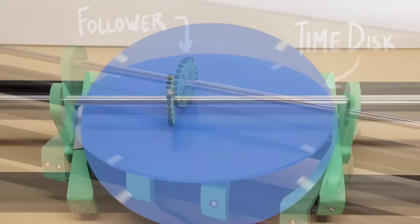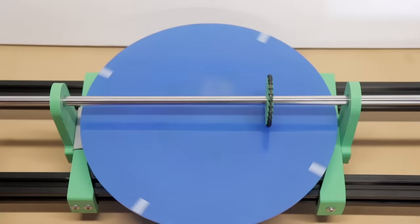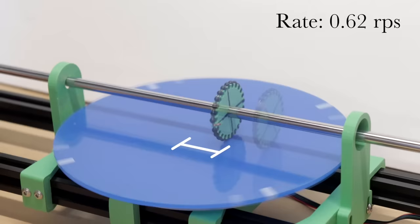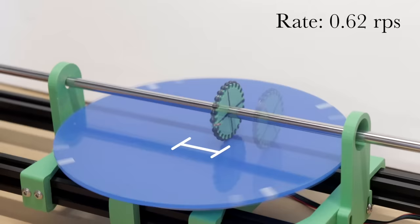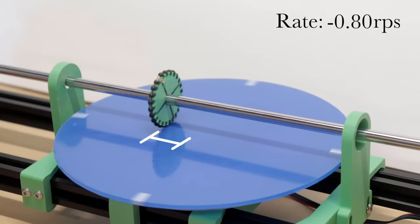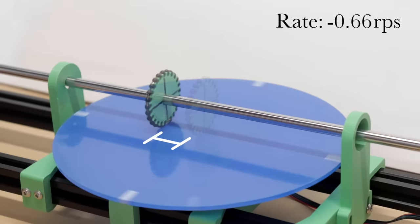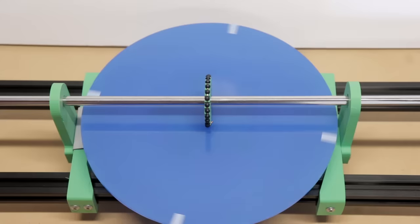The position of the follower relative to the center of the time disk can be changed over time. Notice how at any given position, the follower disk is rotating at a certain rate. If the follower is farther away from the center of the disk, it rotates at a higher rate. If the follower is on the opposite side, it rotates in the opposite direction, or at a negative rate. If the follower is in the center, it doesn't rotate at all. So the placement of the follower determines the rate at which it rotates, and we can change that rate of rotation by changing the position of the follower.